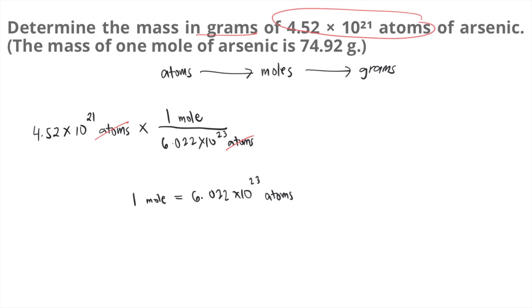Now that we have the moles, we can convert it to grams. How do you convert moles to grams? What is our conversion factor? We will use the molar mass of arsenic. It's already given in the question. The mass of 1 mole is 74.92 grams. So you can write it as 1 mole equal to 74.92 grams.